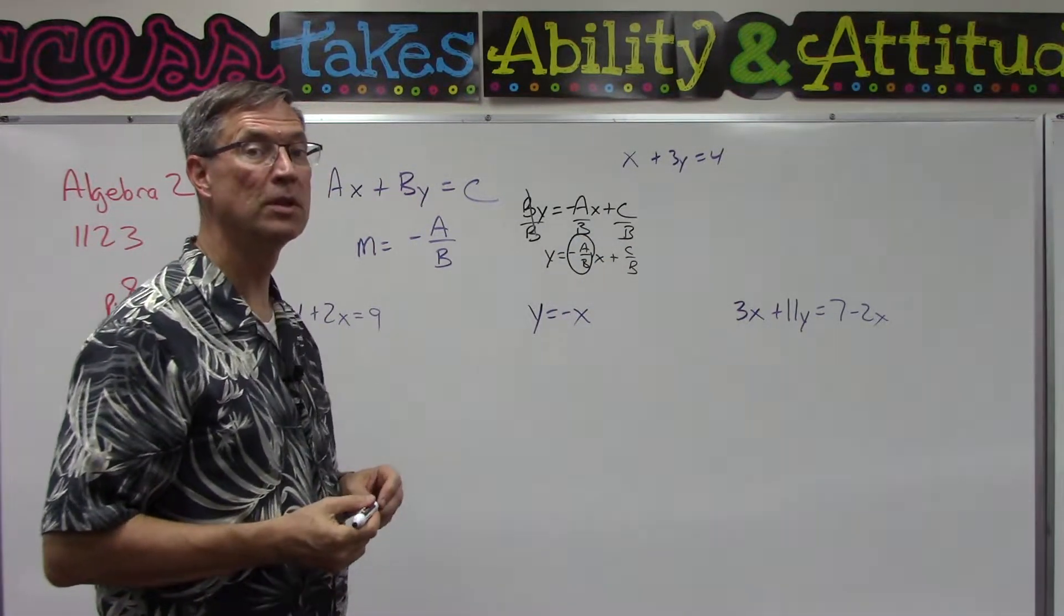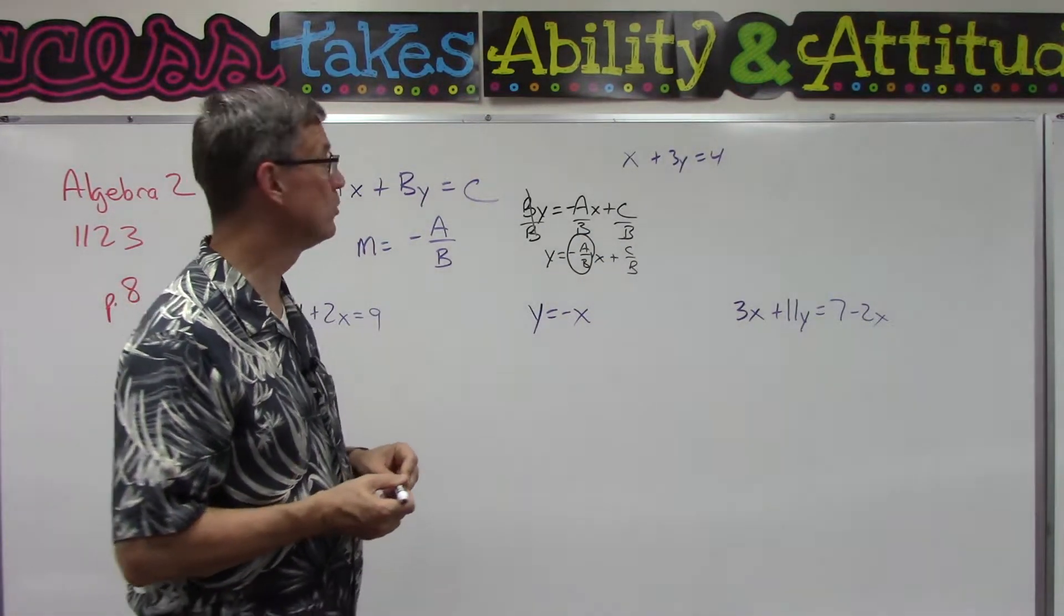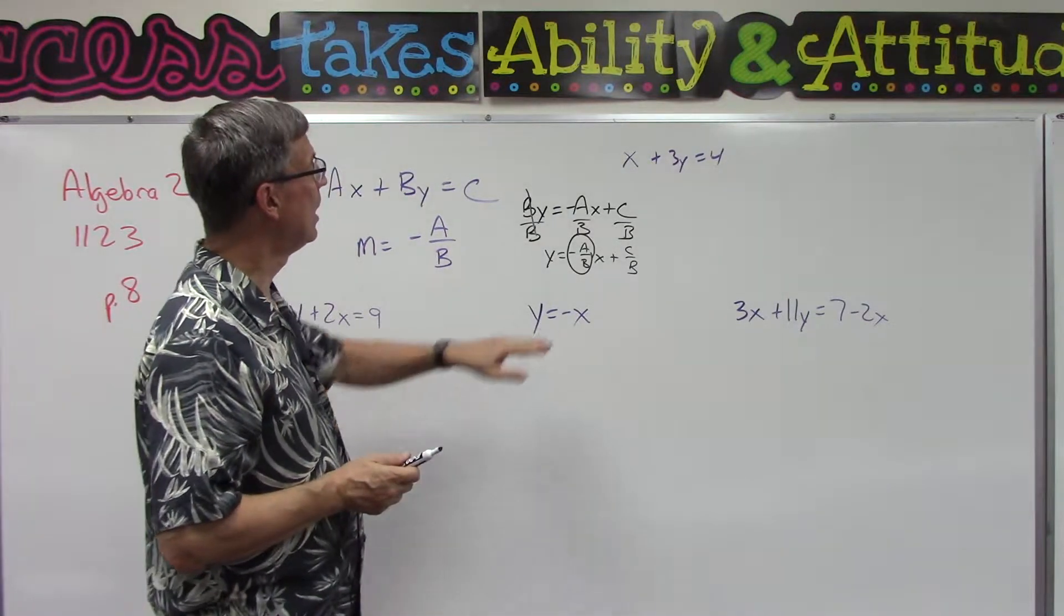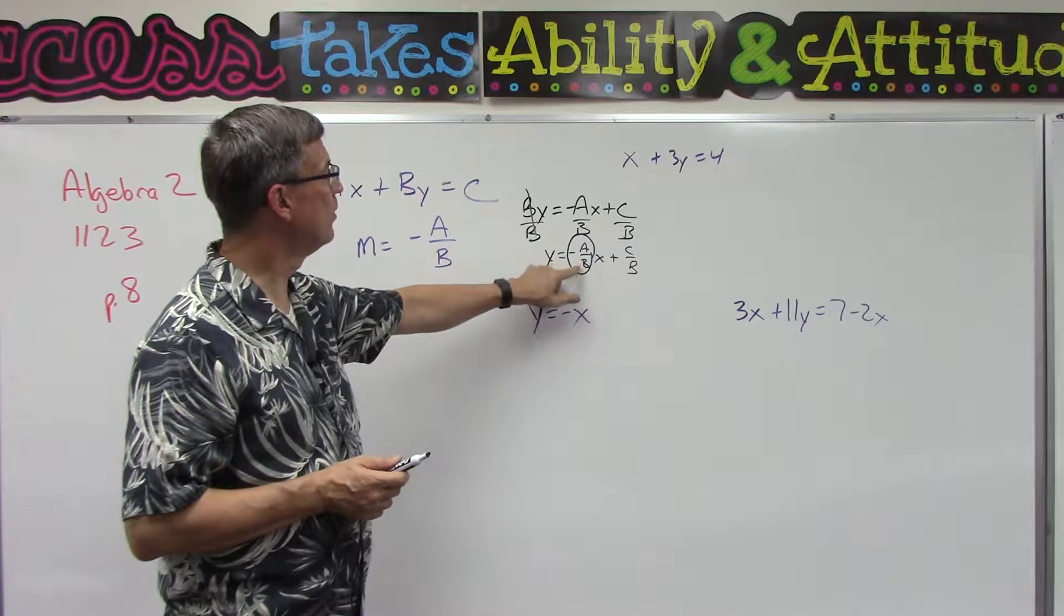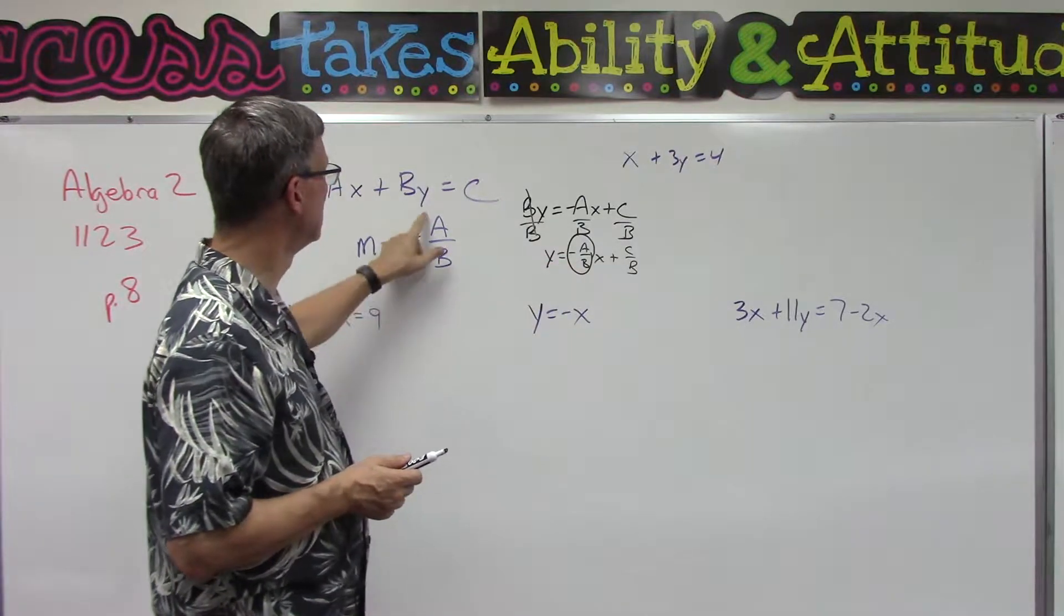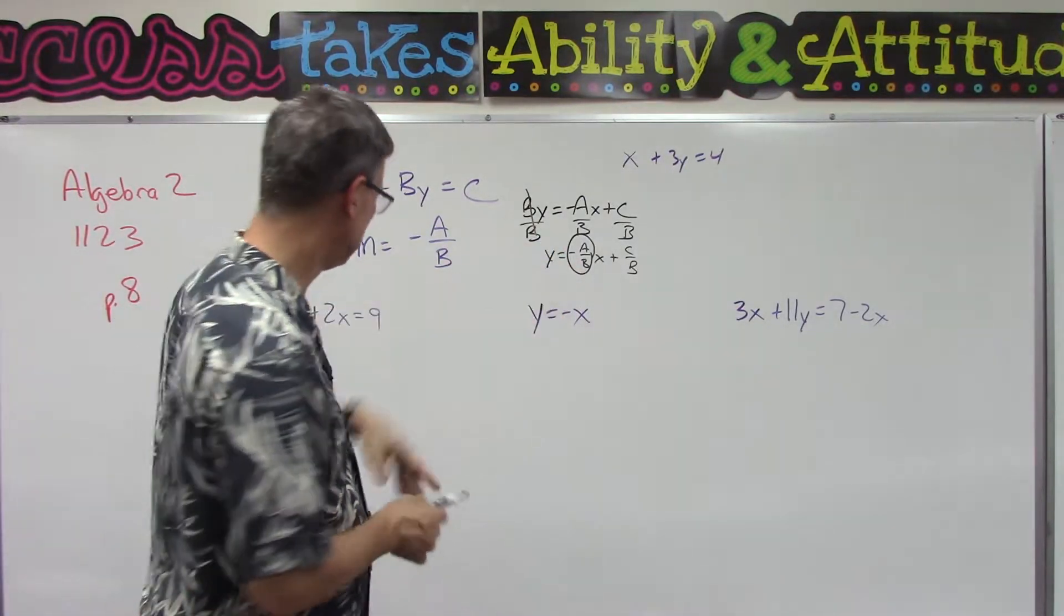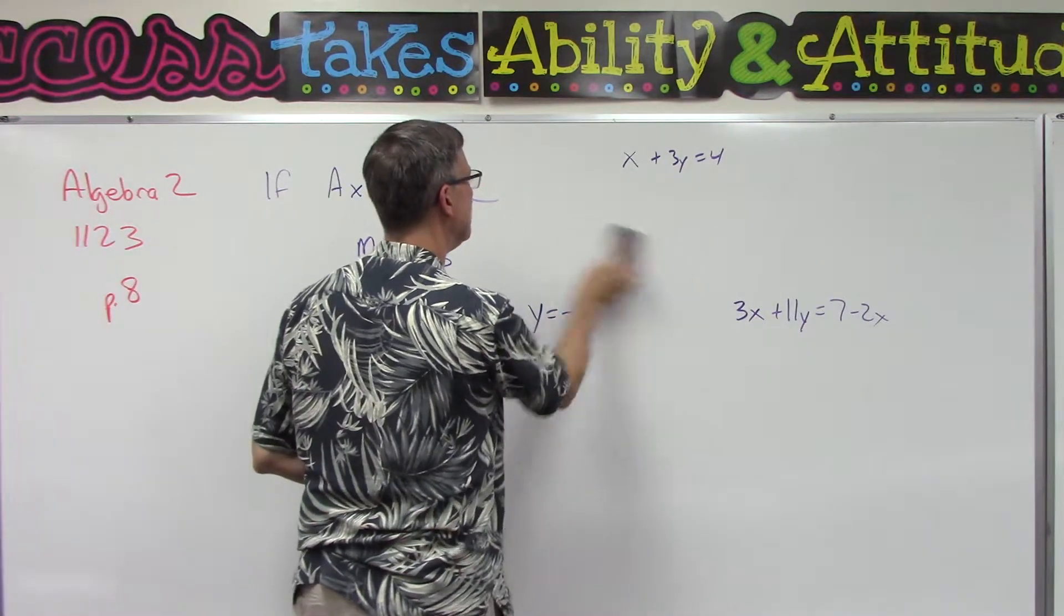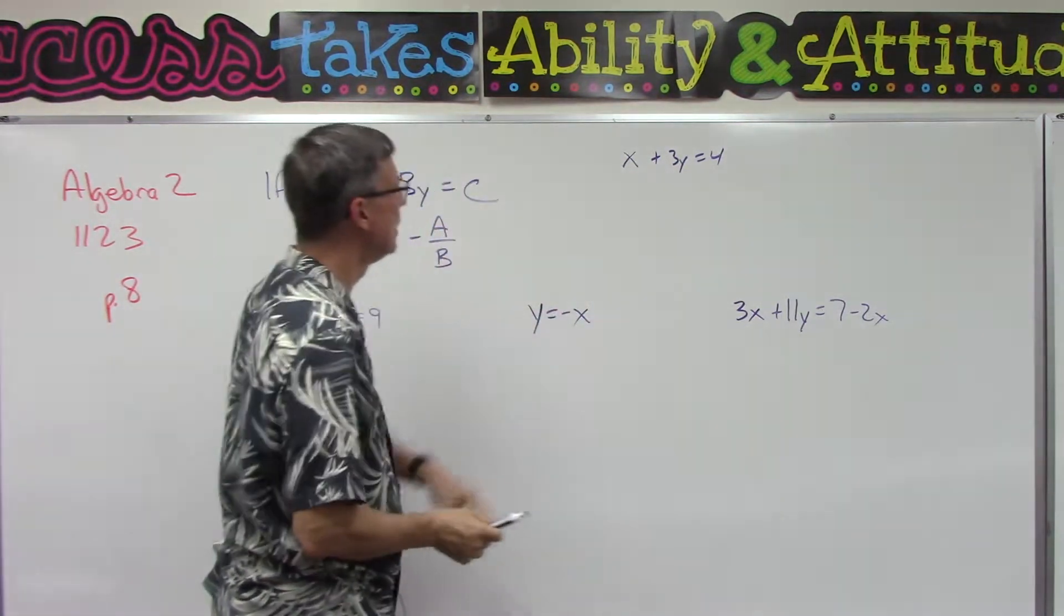We're going to get to that in a future lesson called the y-intercept form of a line. But this negative a over b is the same as the slope. Anyways, don't worry about that. That's probably not helping you, that's probably confusing you, so I'm even going to erase that.